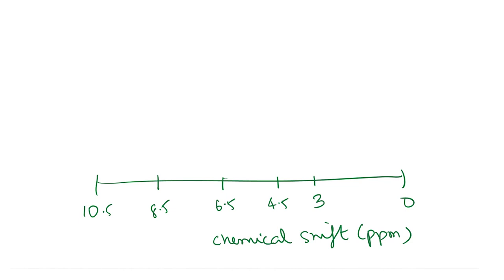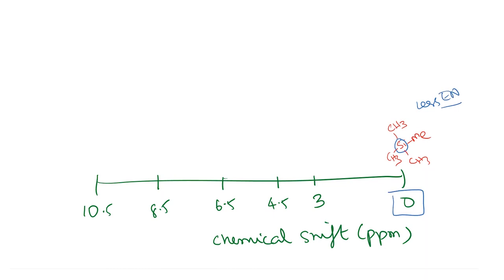As we already know, this is where tetramethylsilane (TMS) — Si(CH3)4 — comes in. Silicon is less electronegative, and therefore TMS shows up at around 0 ppm. Keep in mind we are looking at the hydrogens on the methyl groups.